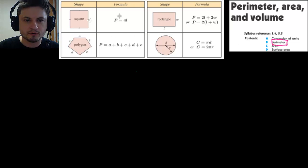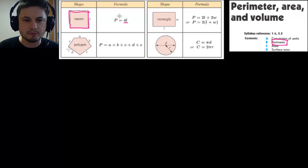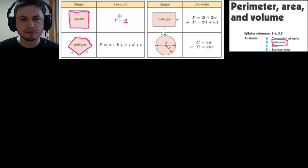Perimeter refers to the sum of all of the sides of a shape. The perimeter of a square is found by adding all four sides together — it's just four lengths. The perimeter of a polygon is the sum of all its sides, which can be different lengths, so it's A plus B plus C plus D plus E.